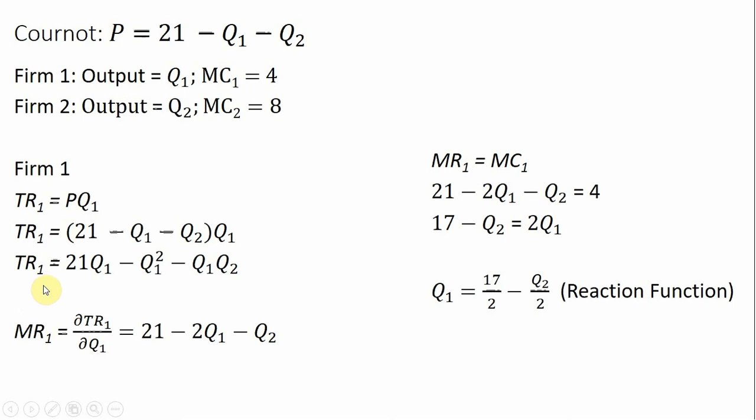Next, we'll get marginal revenue by taking the partial derivative of Firm 1's total revenue function. So taking the partial derivative, we get 21 minus 2 times the output of Firm 1 minus the output of Firm 2.